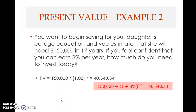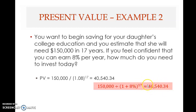Welcome back to Part 6 of Chapter 5. This is how you solve this: we find the present value by taking the future value of $150,000 divided by (1 + r) raised to the power of 17. You can also do it this way: $150,000 multiplied by (1 + 8%) raised to the power of negative 17. We'll get the same answer — $40,540.34.